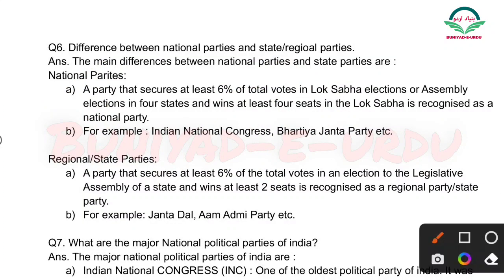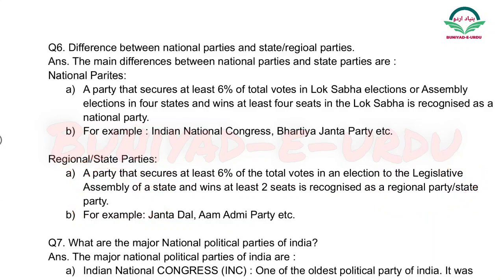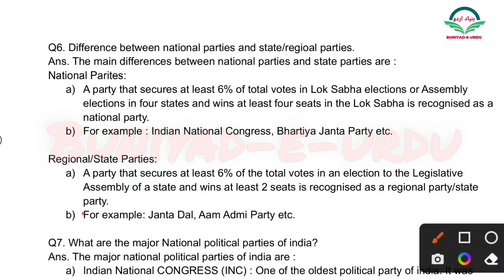India mein at present saat national parties hain — there are seven national parties of India. Uske baad hai regional parties — bilkul national parties ki tarah hi hai lekin yeh state mein hota hai. A party that secures at least six percent of the total votes in an election to the Legislative Assembly is called a state party. For example, Janta Dal ya Aam Aadmi Party.